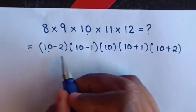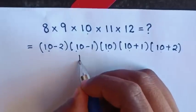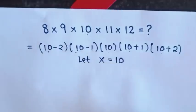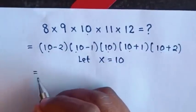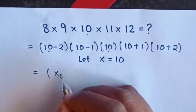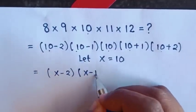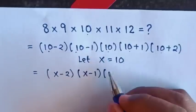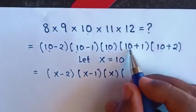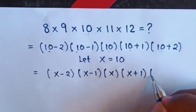Then, we can see 10 is common, so we let x equal to 10. Then it will be equal to (x minus 2) times (x minus 1) times x times (x plus 1) times (x plus 2).